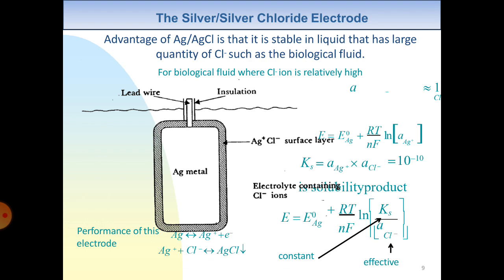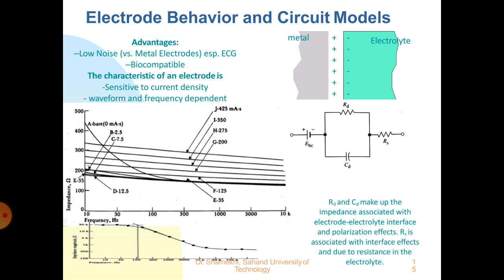This is the surface of the silver-silver chloride electrode. Here the Ag metal has insulation and a lead wire, and the outer side is coated with an Ag⁺ and Cl⁻ surface layer. The electrode contains Cl⁻ (chloride) ions. This shows the electrode behavior and circuit model — the electrical equivalent circuit for the Ag-AgCl electrode. The advantage of the Ag-AgCl electrode is low noise, and its characteristics include sensitivity to current density, waveform, and frequency dependence.